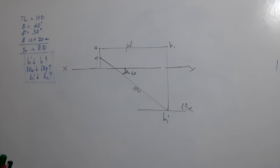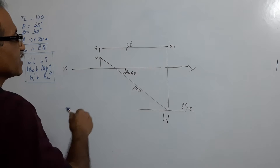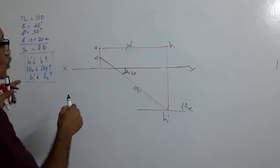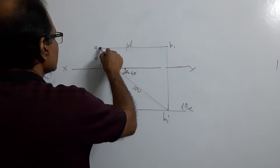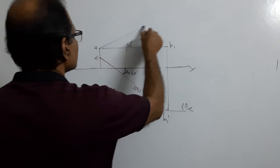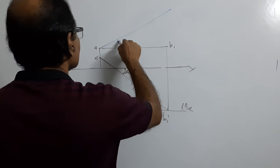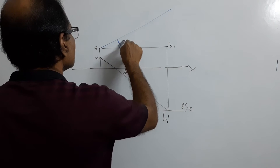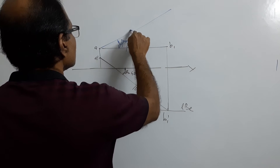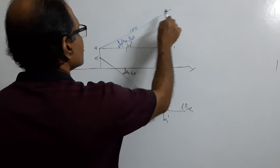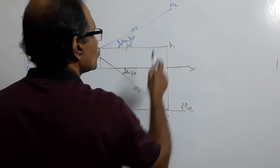Then from a', draw b2' upwards at 30 degrees. Locate b2'.